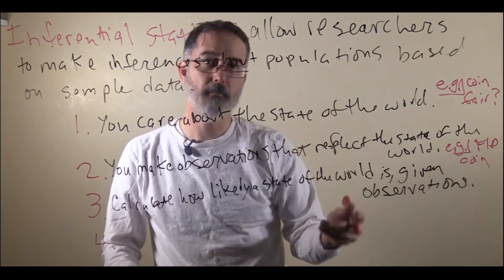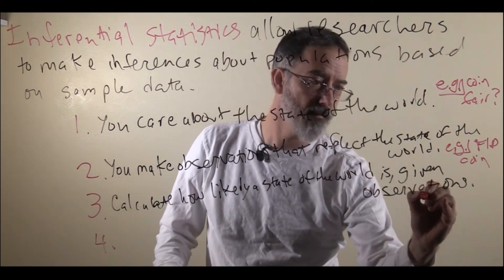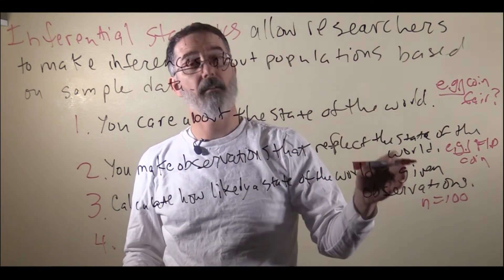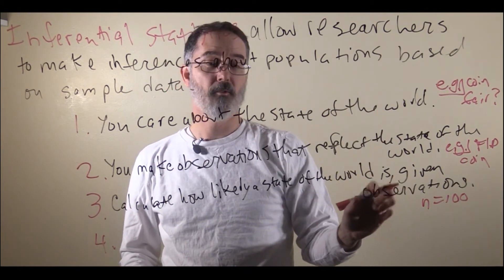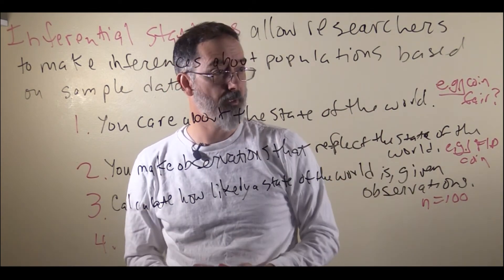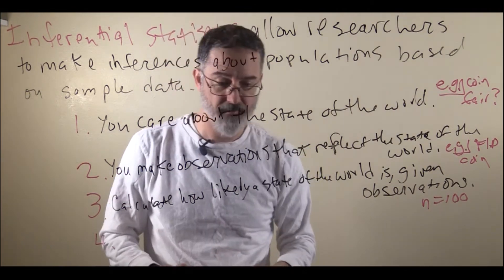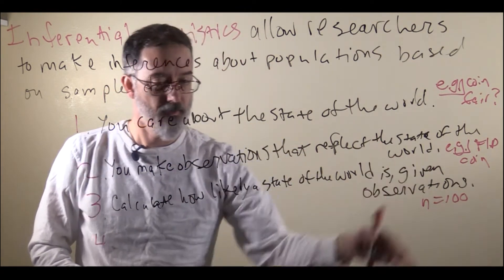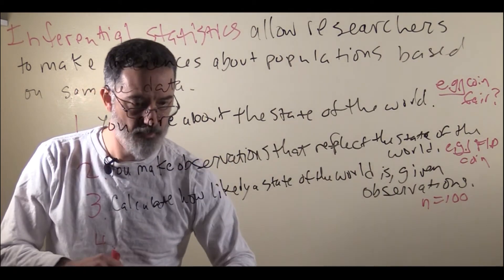For example, if you flip the coin 100 times and every time you flipped it the coin came up heads, you would probably suspect that it is not a fair coin, because it should come up heads only about half the time if it is fair. So you calculate this probability about the state of the world, and then...